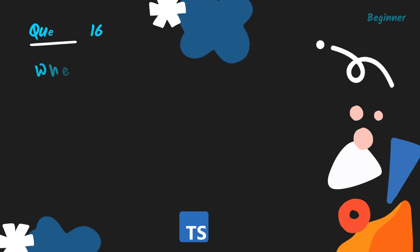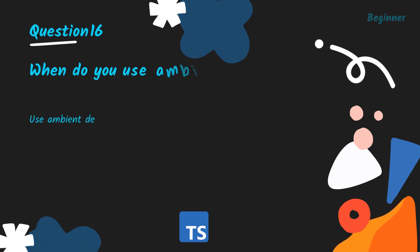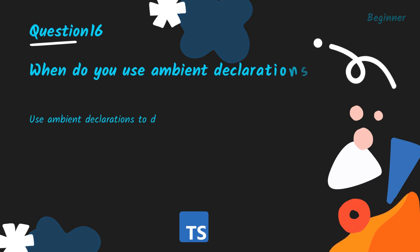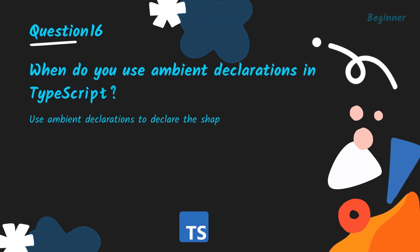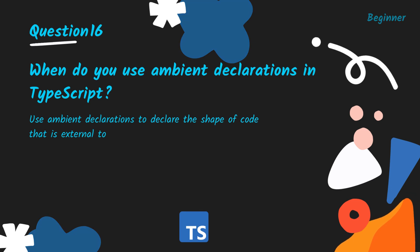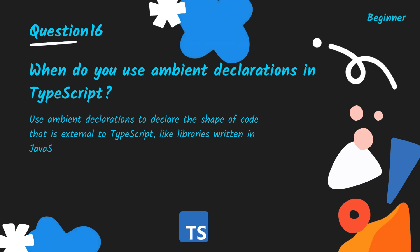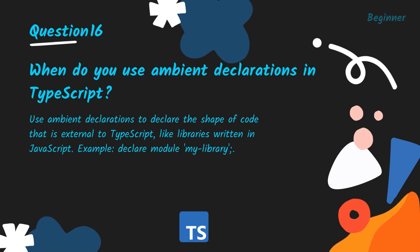When do you use ambient declarations in TypeScript? Use ambient declarations to declare the shape of code that is external to TypeScript, like libraries written in JavaScript. Example: declare module 'my-library'.